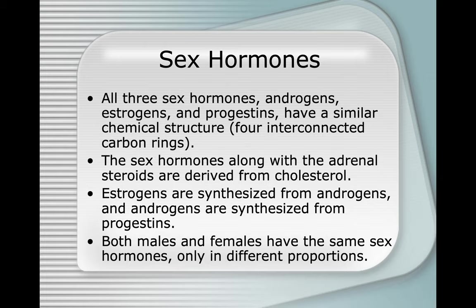All three sex hormones — androgens, estrogens, and progestins — have a similar chemical structure: four interconnected carbon rings. The sex hormones, along with the adrenal steroids, are derived from cholesterol. Estrogens are synthesized from androgens, and androgens are synthesized from progestins.